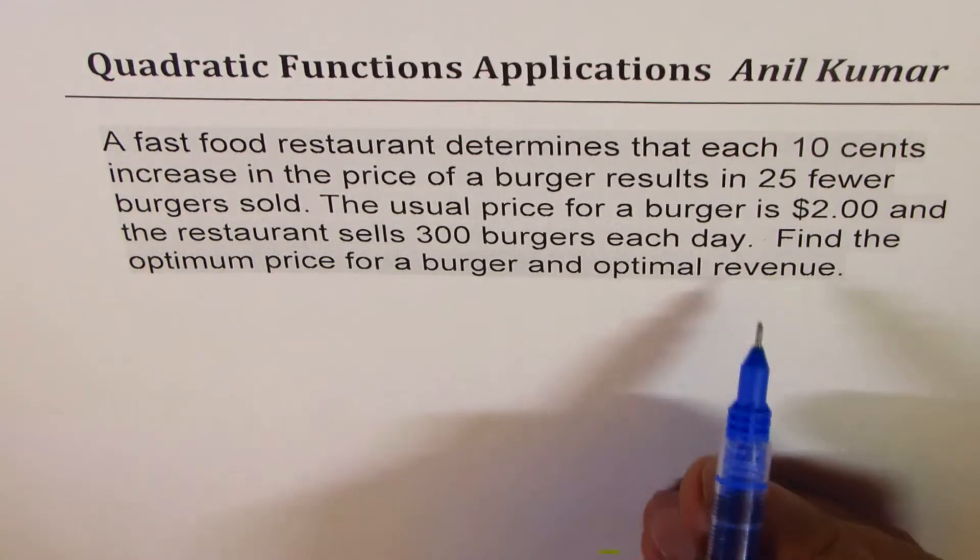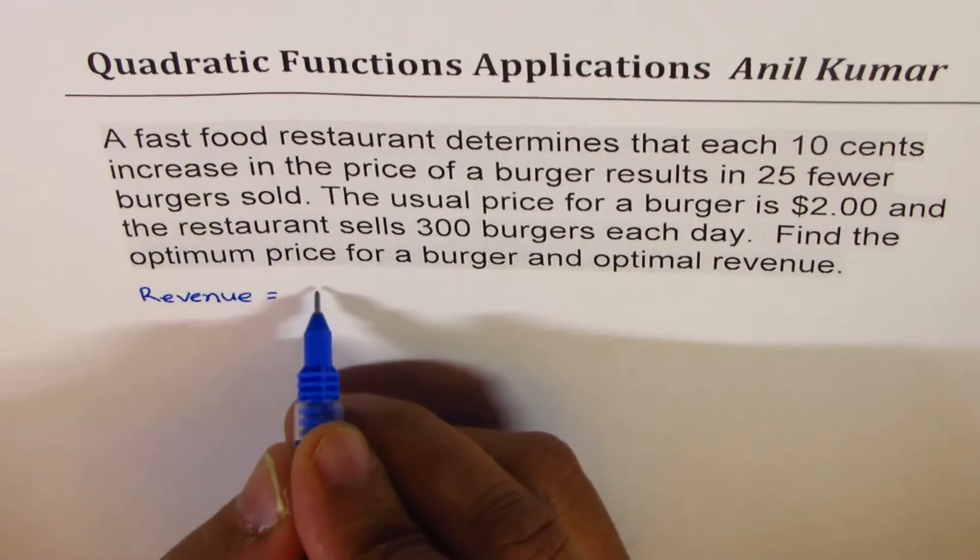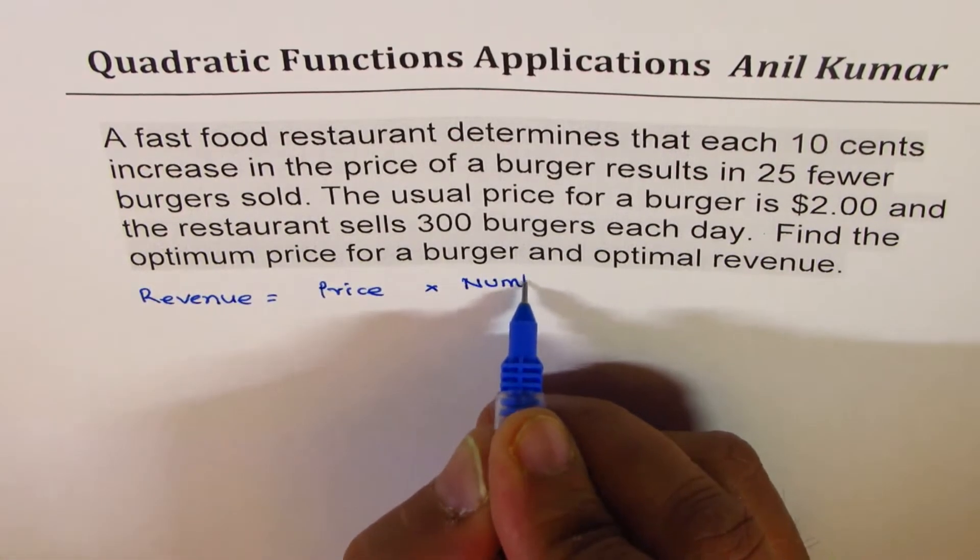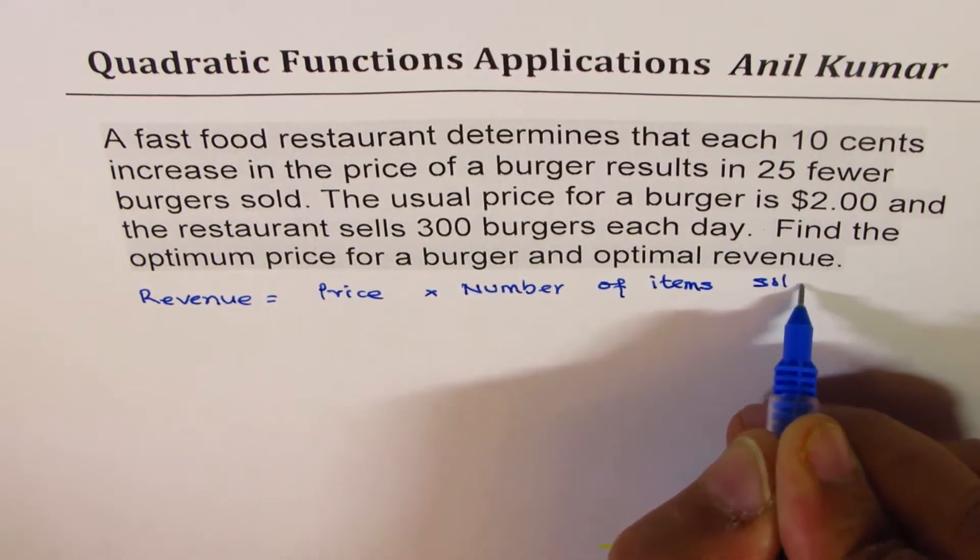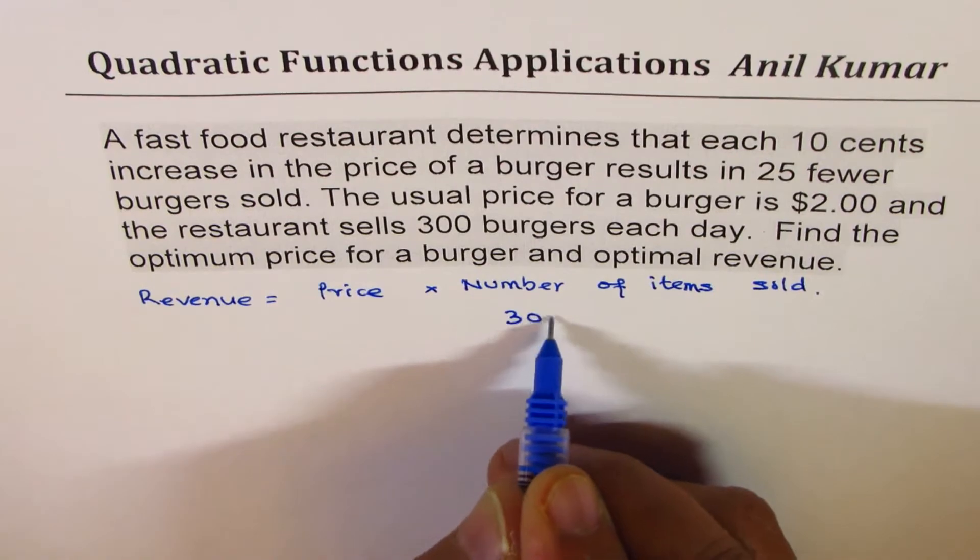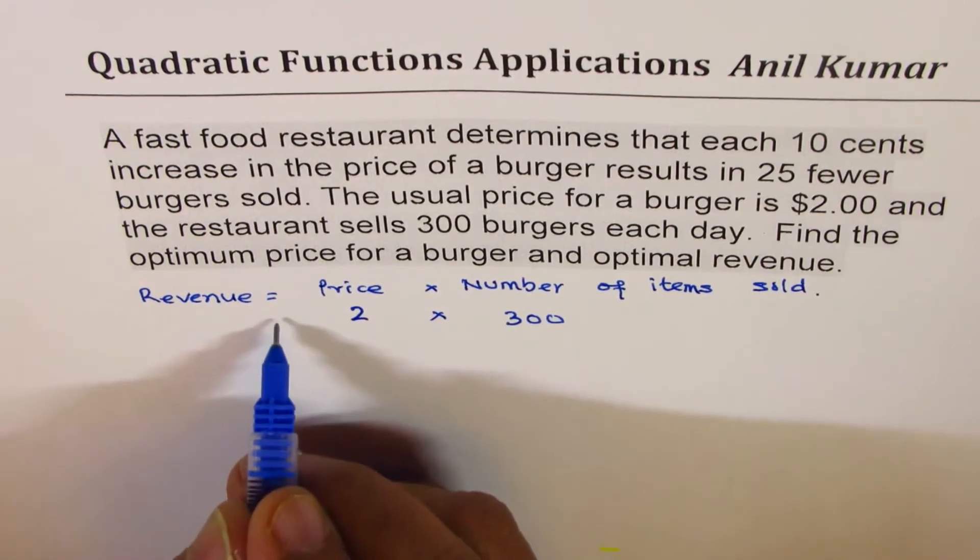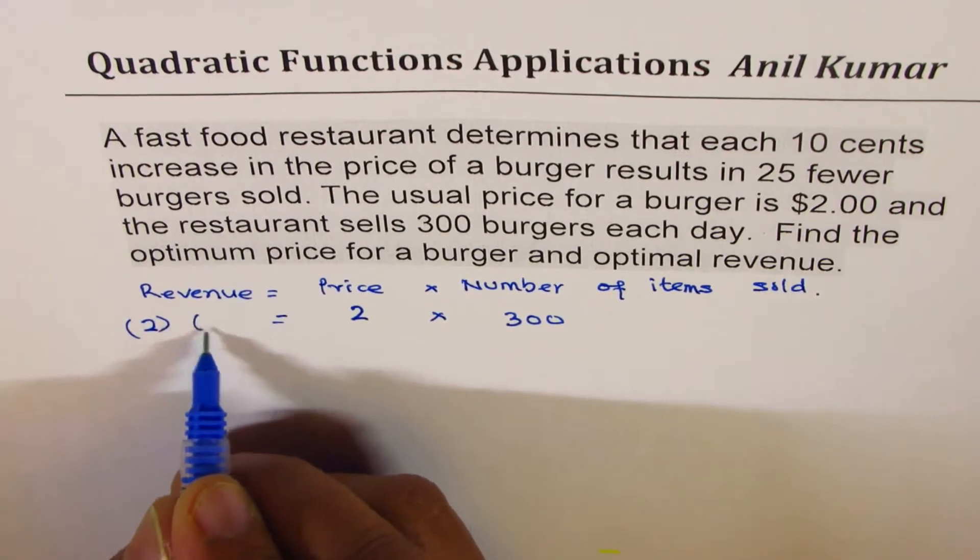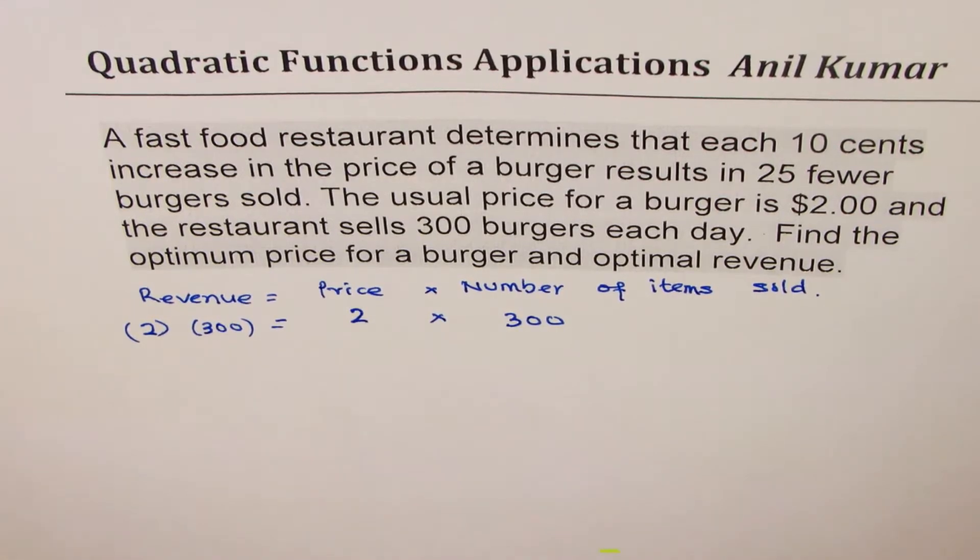So let's understand what is revenue. Revenue is the price times the number of items sold. So if you're selling 300 burgers each day and each is being sold for $2, the revenue will be 2 times 300. That is the standard revenue for the restaurant at present.